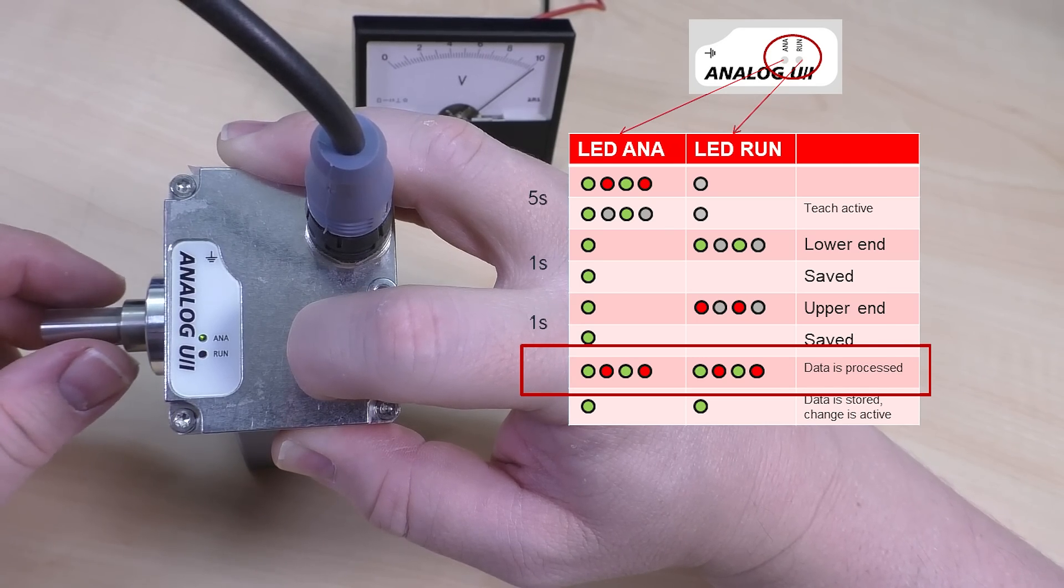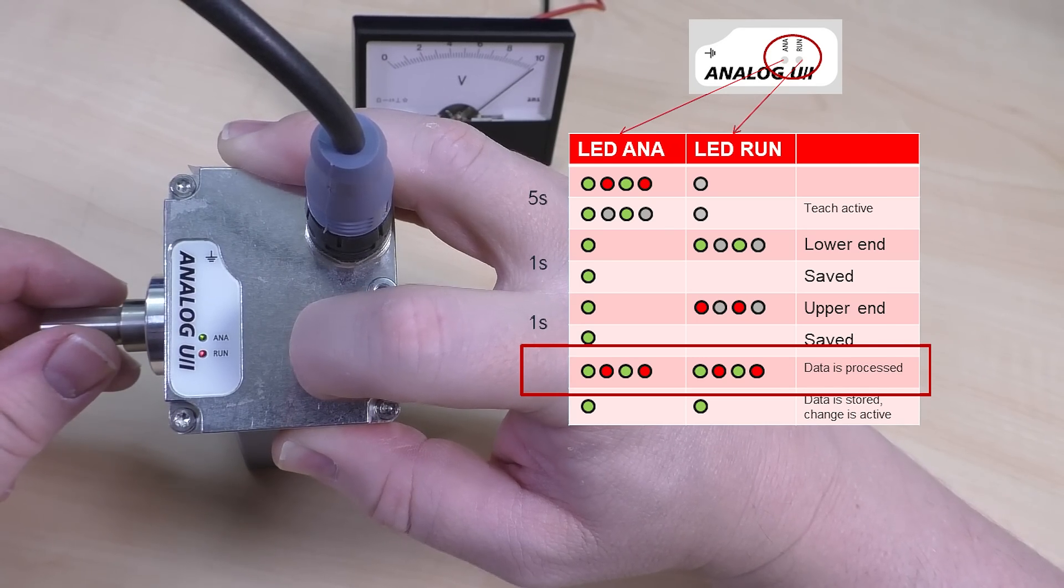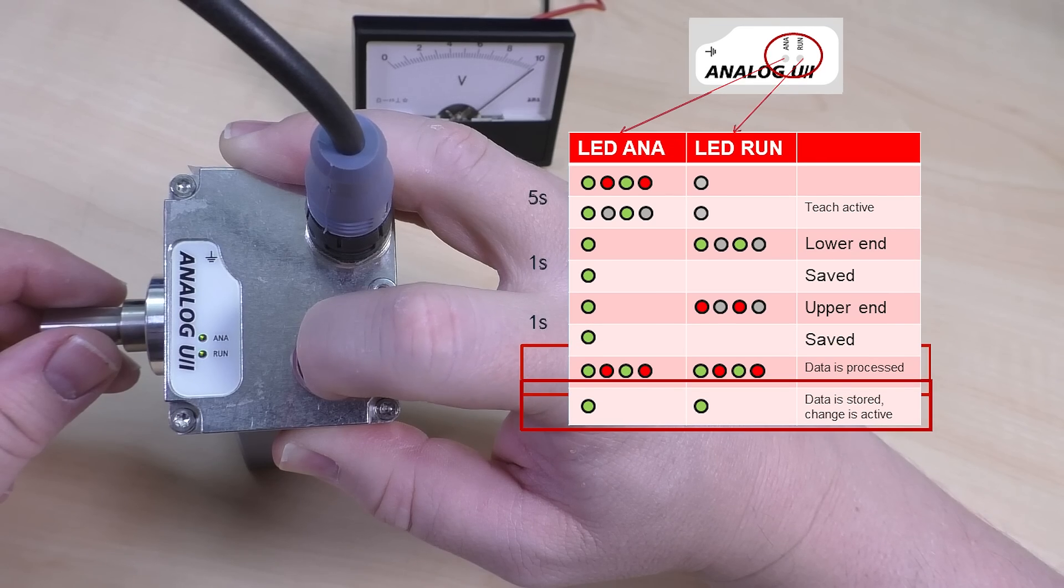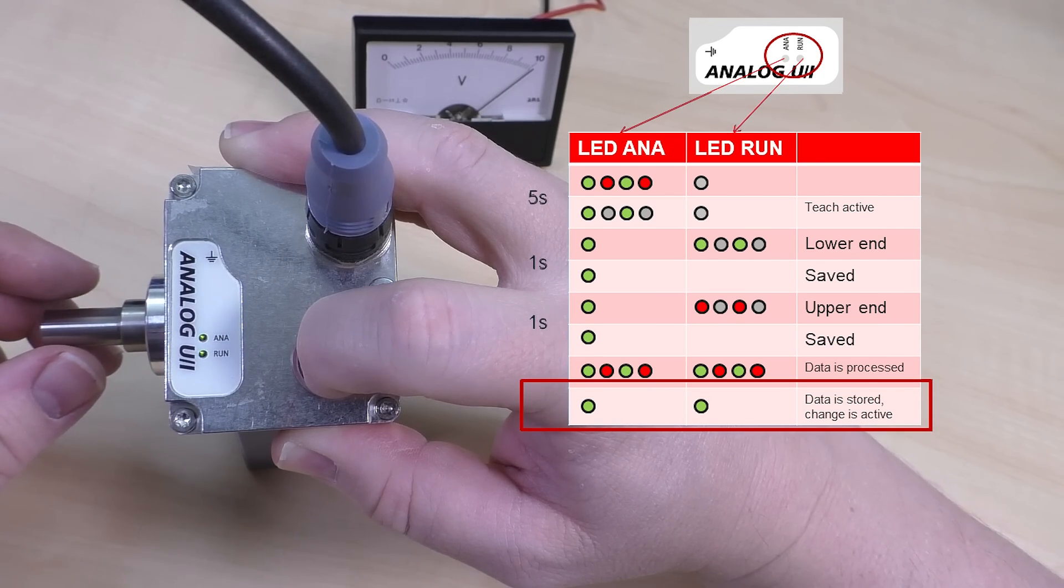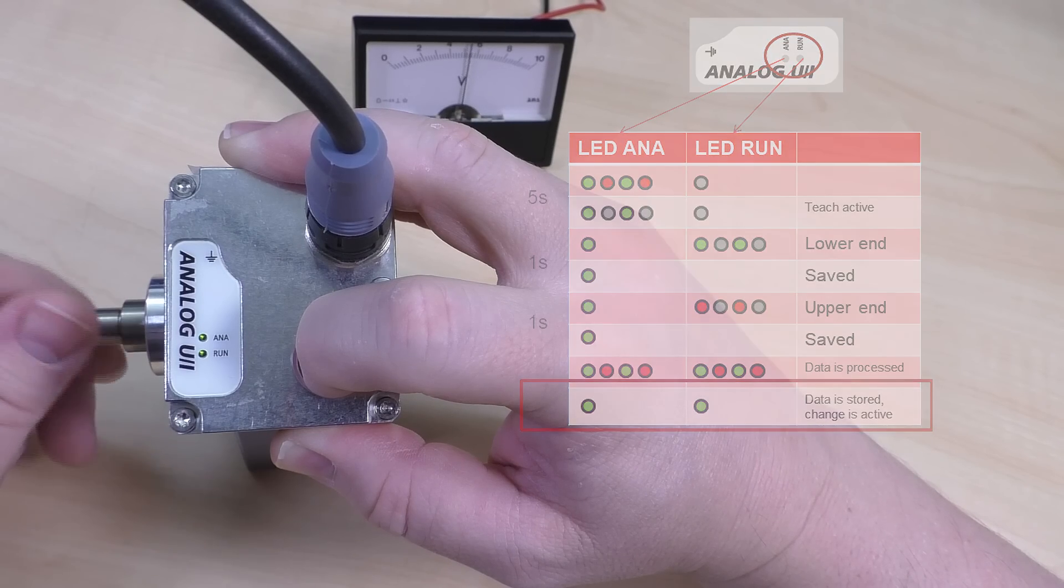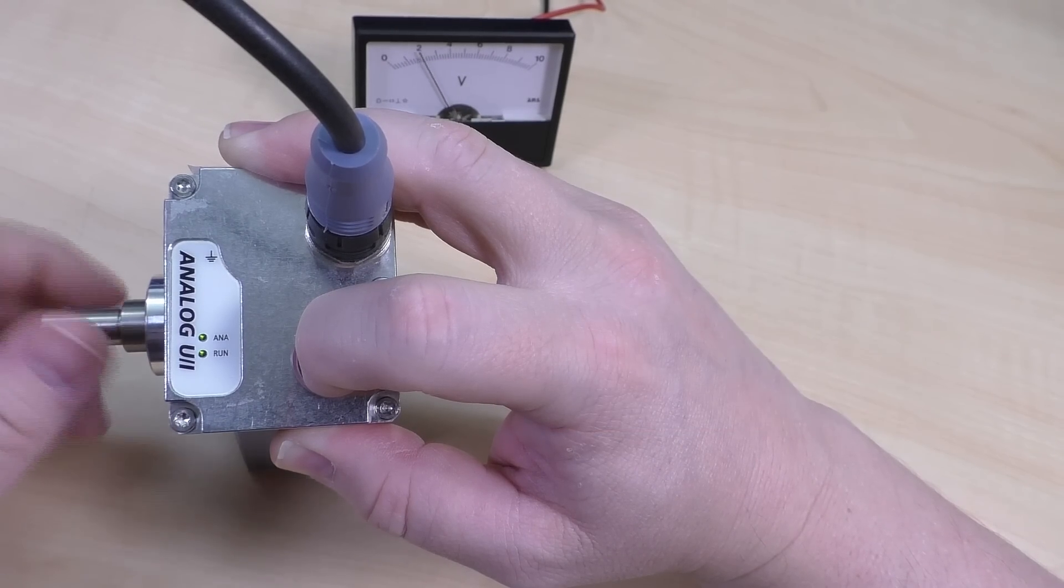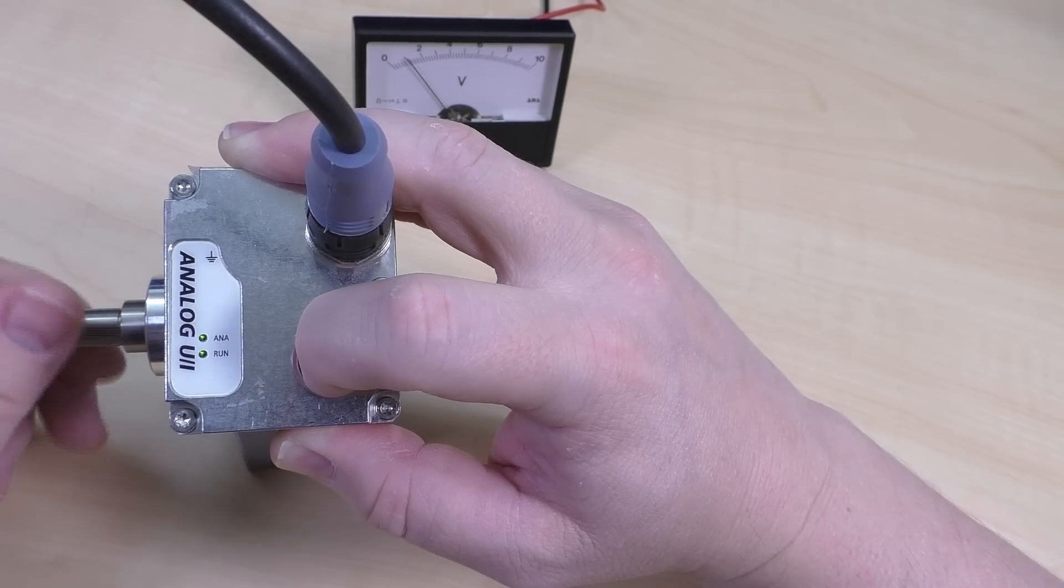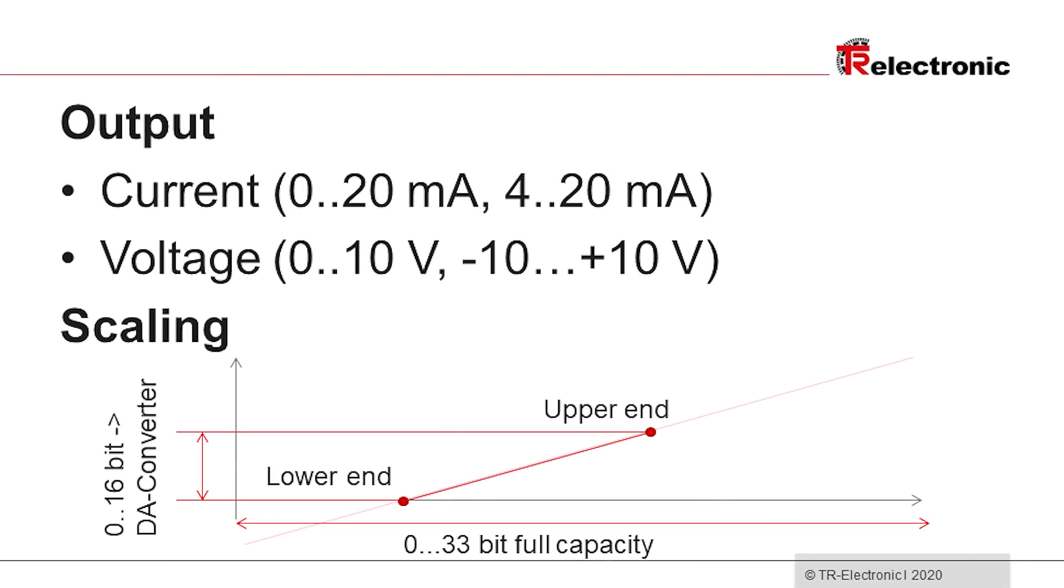Both LEDs will flash red and green to indicate that the operating range is permanently programmed. Once the encoder has been fully programmed, both LEDs will turn solid green indicating that the encoder is fully operational. The mechanical operating range has now been scaled across the entire electrical signal range.